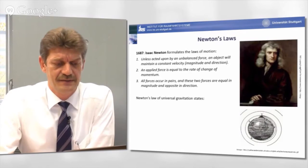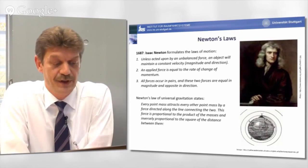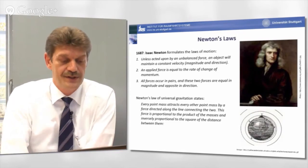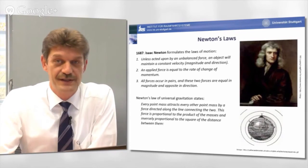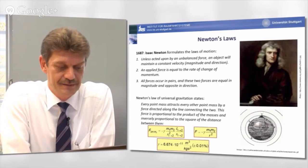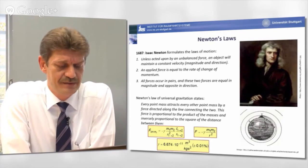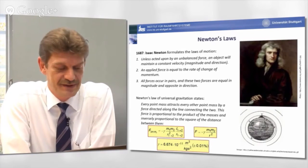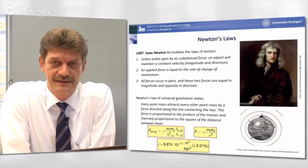And finally, Newton was also able to derive the universal gravitational law, which states that every point mass attracts every other point mass by a force directed along the line connecting the two. This force is proportional to the product of the masses, and inversely proportional to the square of the distance between them. In mathematical formula, it's stated here. It's important to note that Newton was not able to measure the gravitational constant, denoted here as gamma.